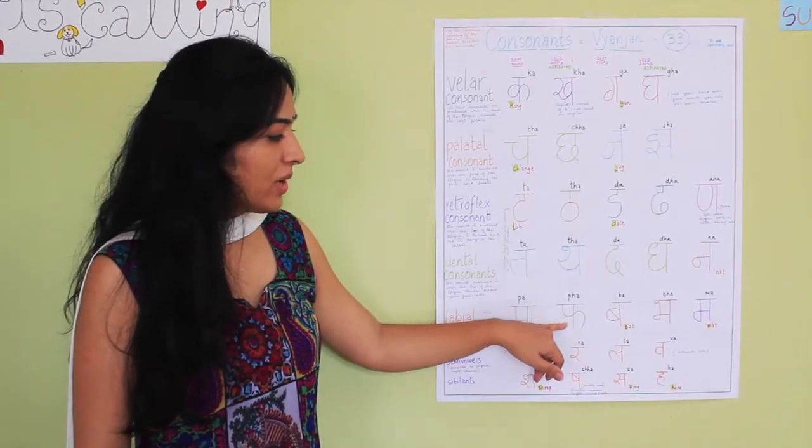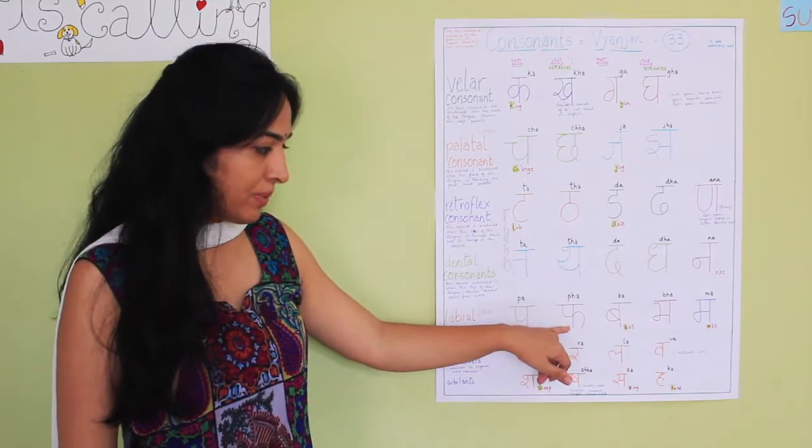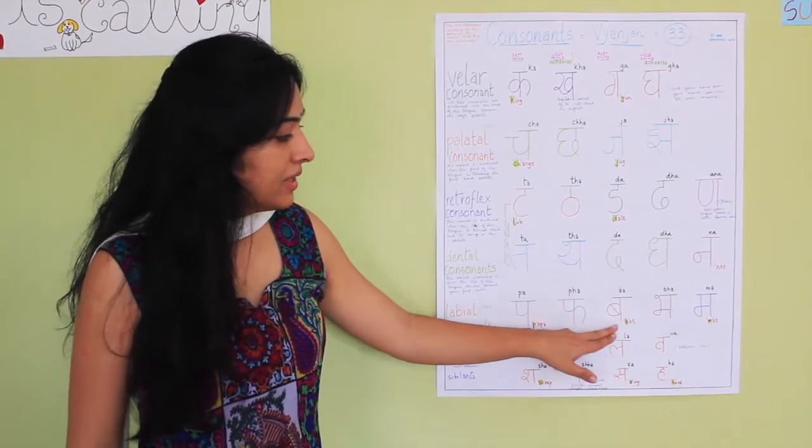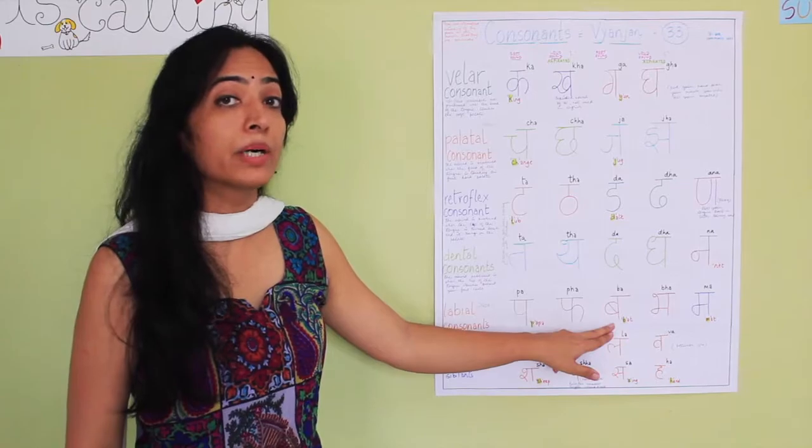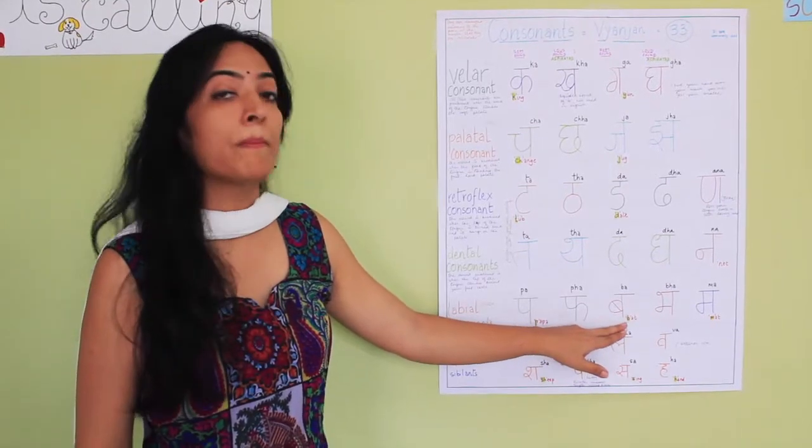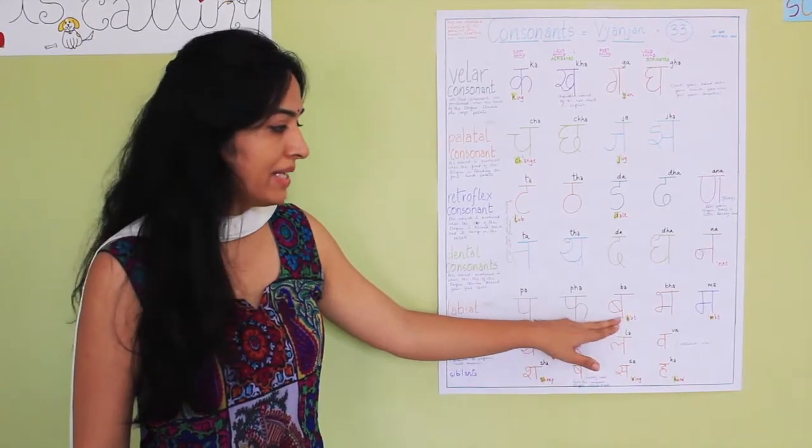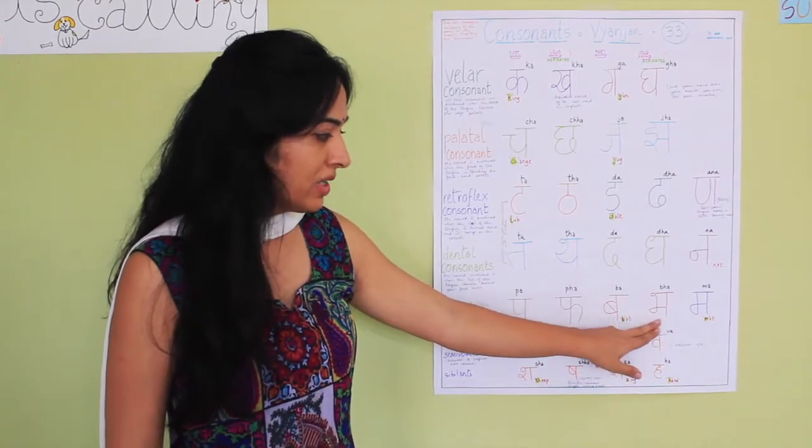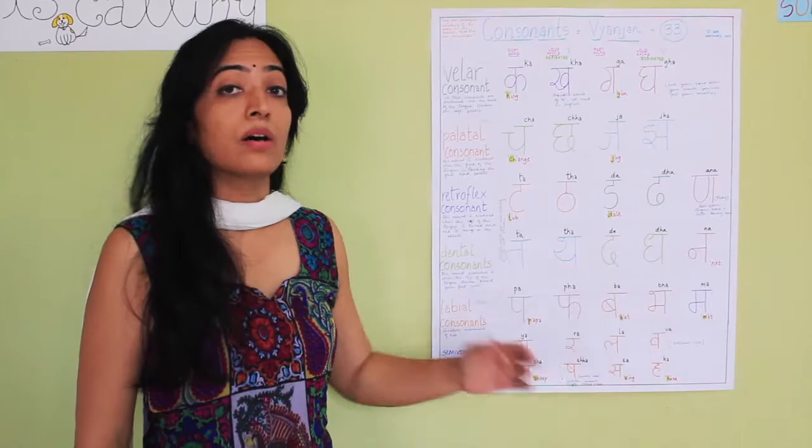This one is the loud sound, the aspirated sound of P, is P. P, P. The next one is B, the B from bat. The B from bat. The next one is the loud sound or the aspirated version of B, is B.